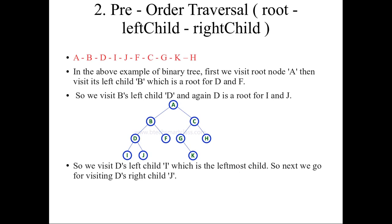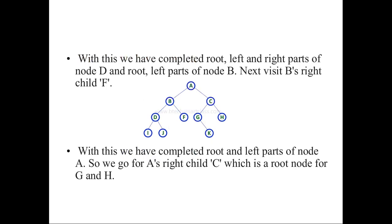D's left child I will be visited because it is the leftmost child. I does not have any children. So once you visit D, you will be visiting I. Once you visit I, you have to go to J, which is the right child of D. With this, we have completed the root, left, and right parts of node D, and the root and left parts of node B. Next, we visit B's right child F.